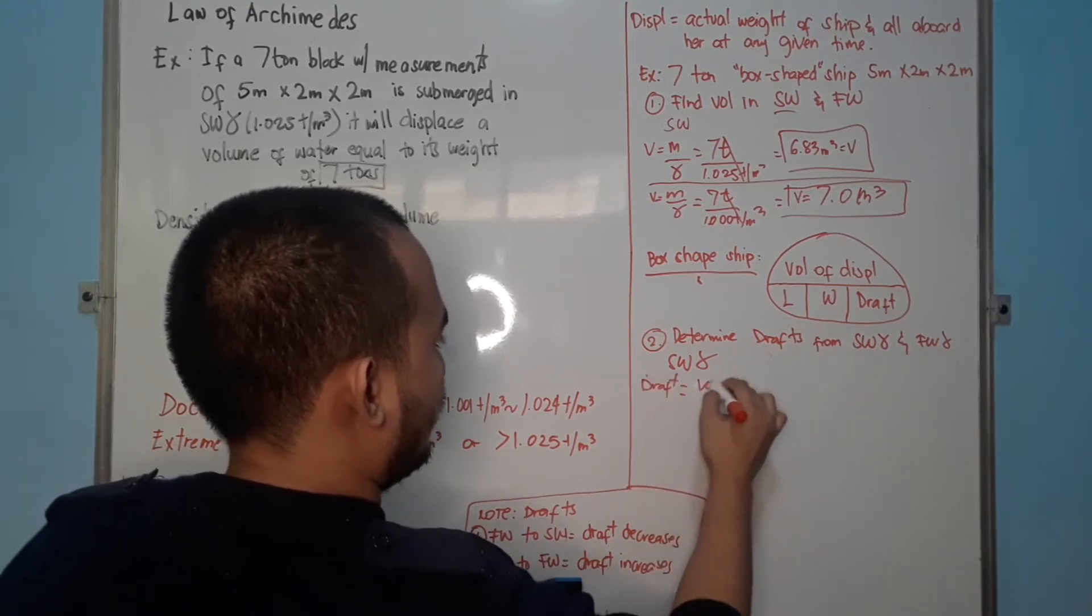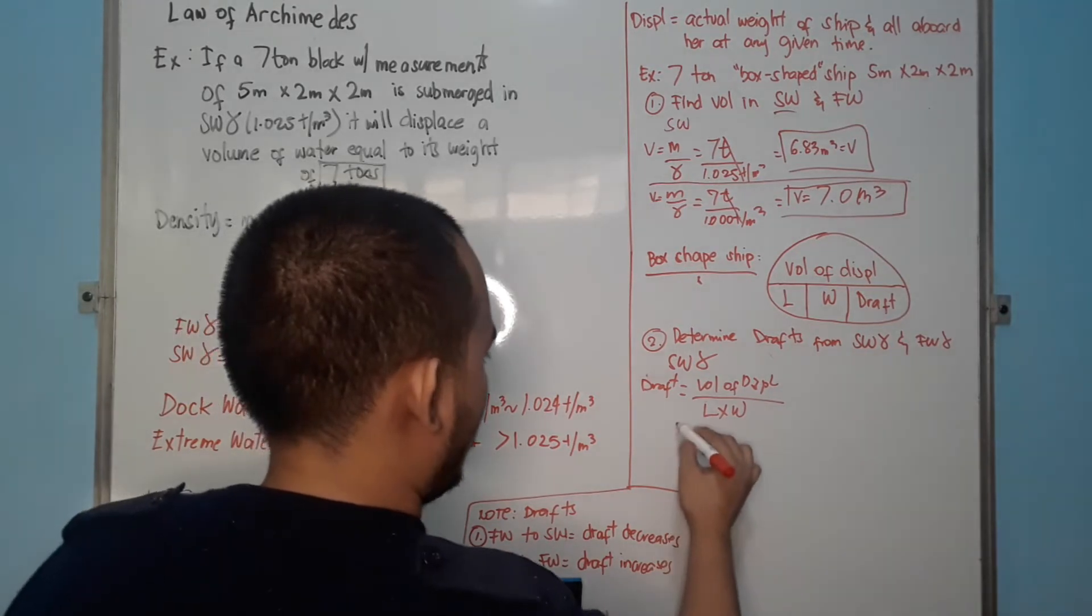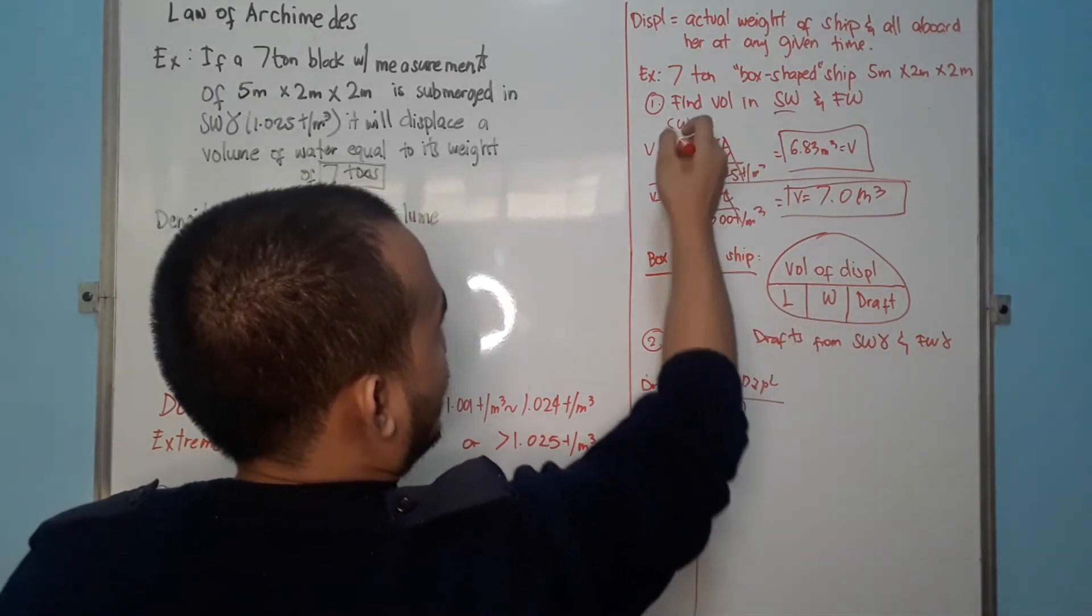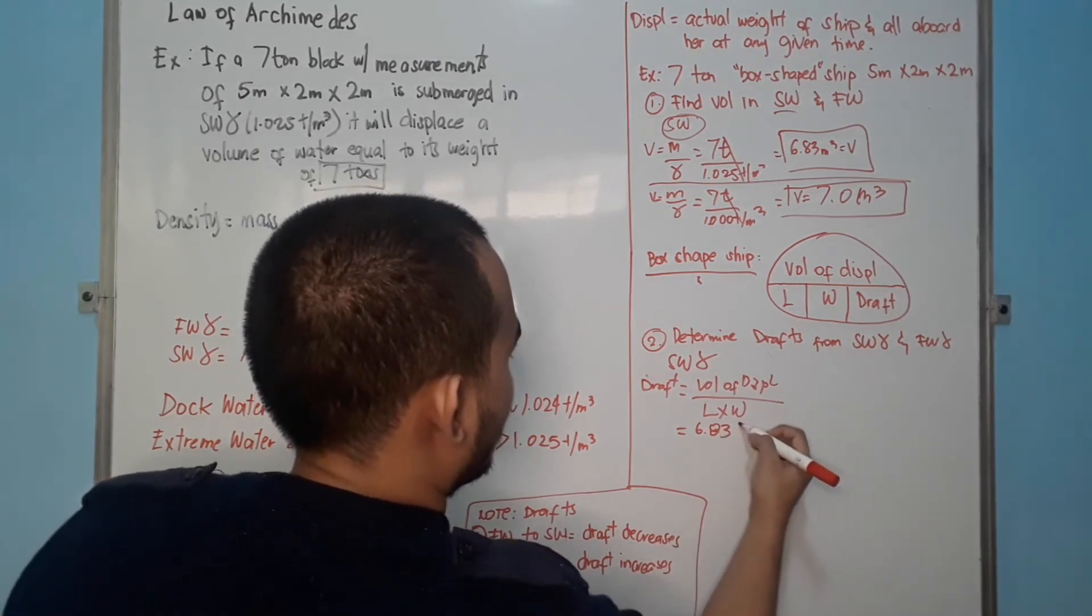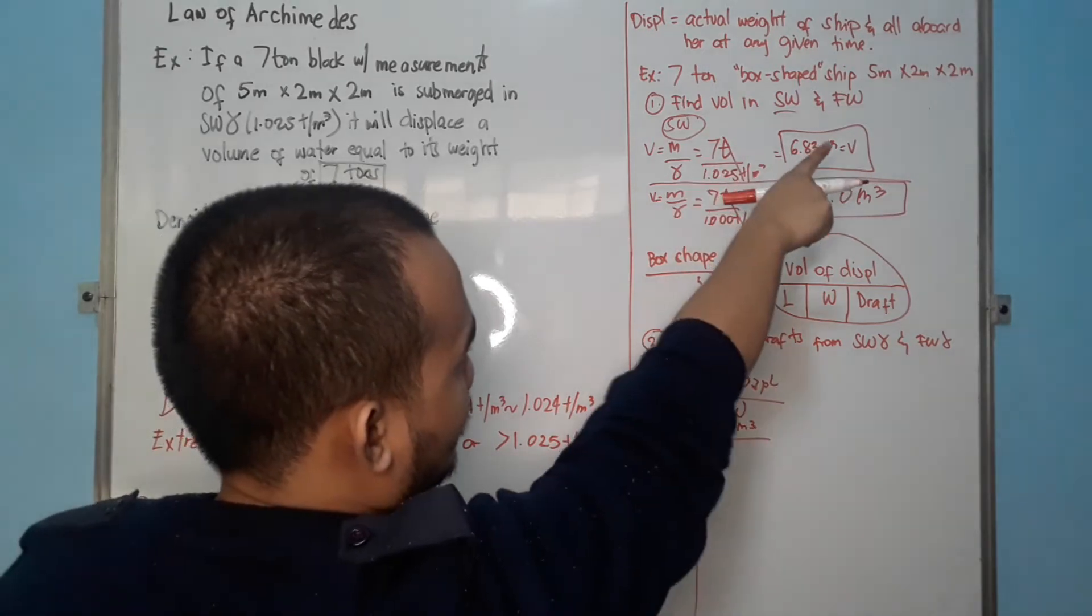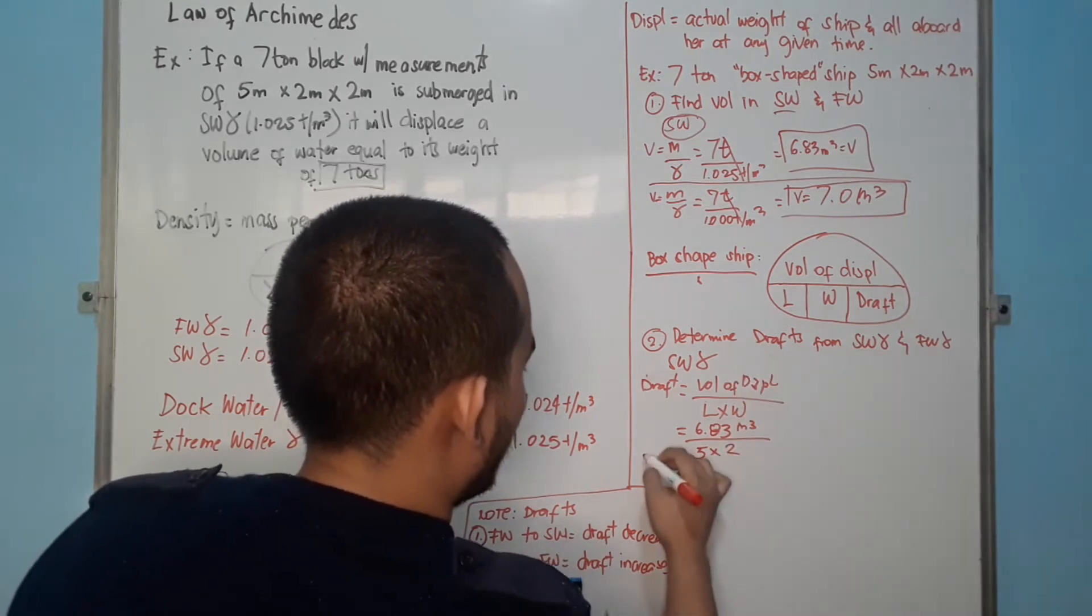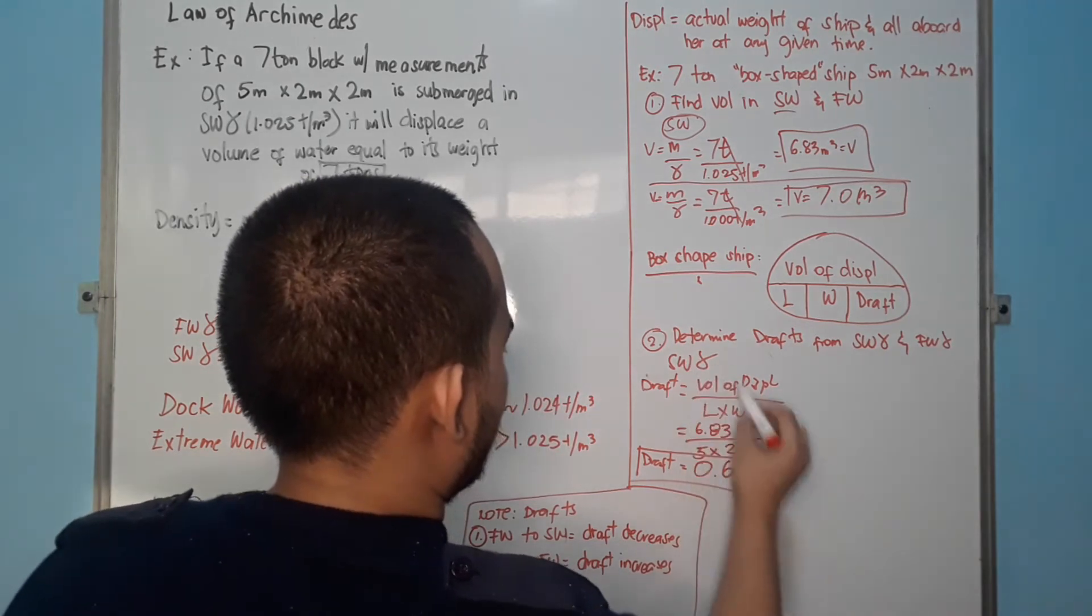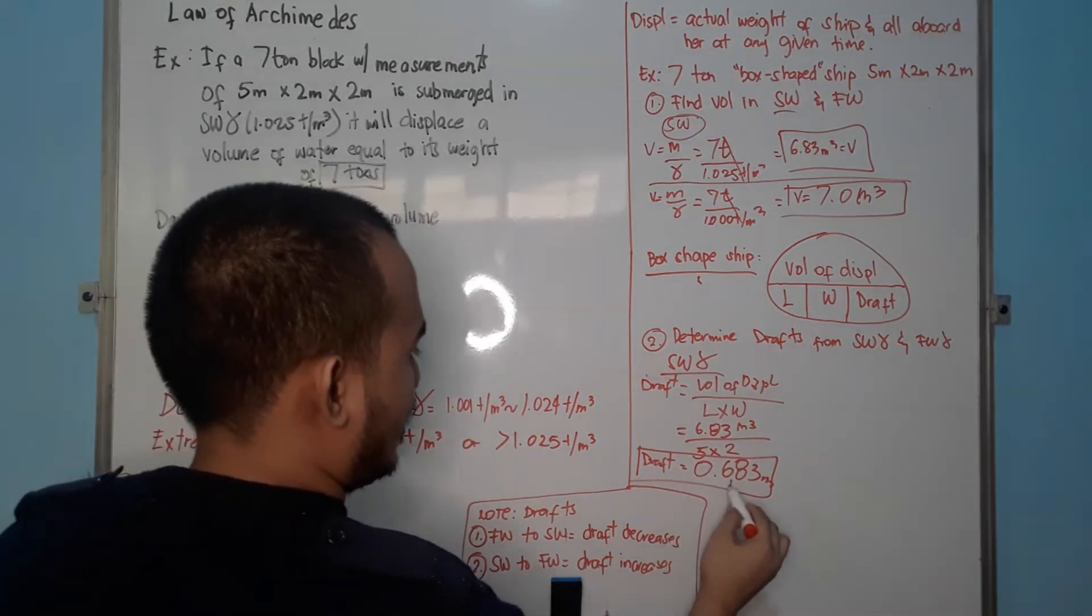For salt water density, we go with the formula, draft equals volume of displacement divided by length times width. And then, if we replace, what is the volume from the top, salt water density, this is our volume for salt water density, 6.83 cubic meters divided by, what's the length and the width? You have a 5 meter by 2. So, 5 times 2, so, your draft will be 0.683. You have this for salt water. This is the draft for salt water.